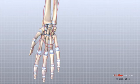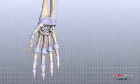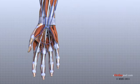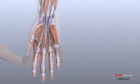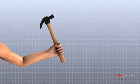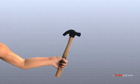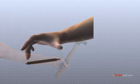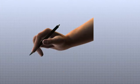When our hands are free of problems, it's easy to take the complex anatomy of the hand for granted. The hand is formed by numerous structures, each of which has an important role in normal hand function. Injuries and conditions that change the way these structures work can greatly impact whether the hand functions normally.